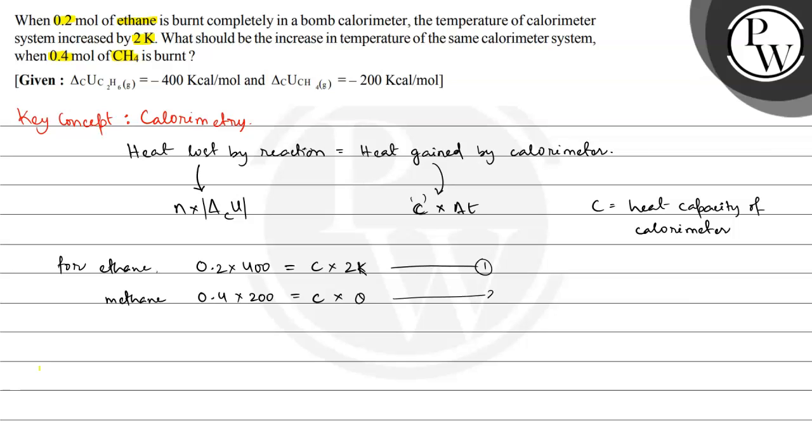Now dividing equation 1 by equation 2. So what will be 0.2 multiplied by 400 divided by 0.4 multiplied by 200...